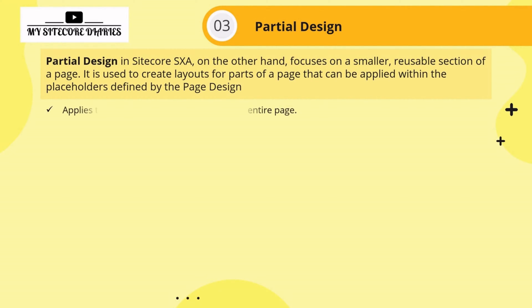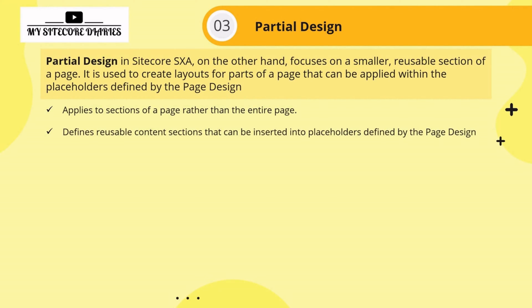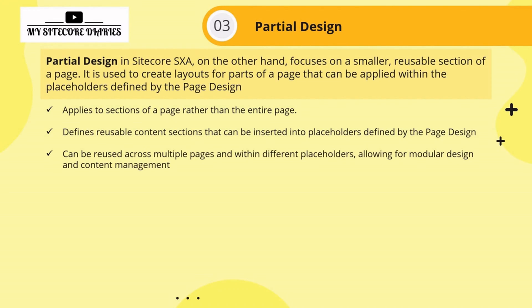So what are the characteristics of partial design? It applies to a section of a page rather than the entire page. It defines reusable content sections that can be inserted into the placeholders defined by the page design. It can be reused across multiple pages and within different placeholders, allowing for modular design and content management.